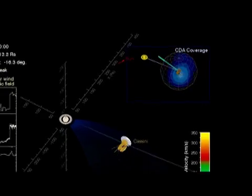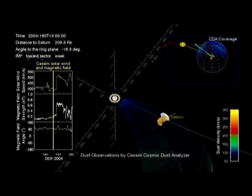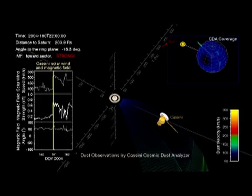The center of the animation shows the simulated stream particle trajectories based on the measured Cassini solar wind velocity and interplanetary magnetic field.